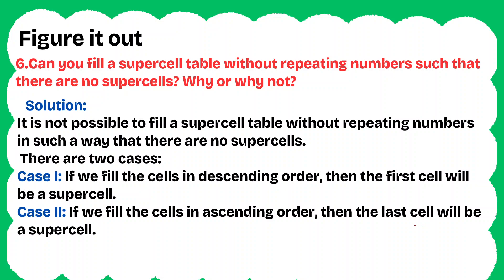Question 6: Can you fill a supercell table without repeating numbers such that there are no supercells? Why or why not? Solution: It is not possible. There are 2 cases. Case 1: If we fill the cells in descending order, then the first cell will be a supercell. If we fill the cells in ascending order, then the last cell will be a supercell.